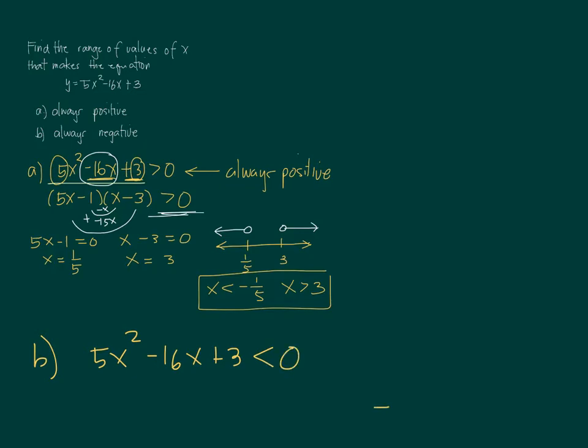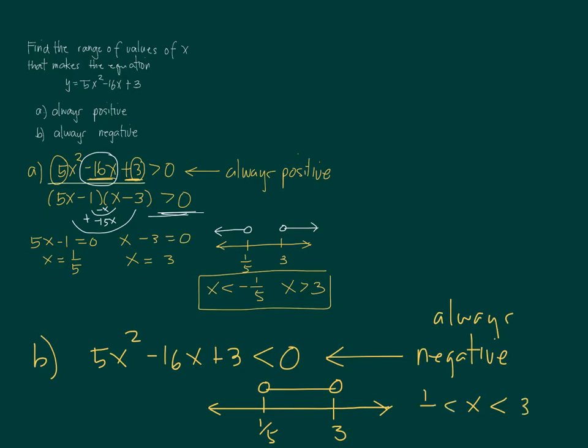That means we only, because the solution should be the same, we'll still consider 1 fifth and we'll still consider 3, but in this case, we have to consider the numbers between 1 fifth and 3. So it will always be negative when x is between 3 and 1 fifth. That's how you solve a problem like this. This is an application of quadratic inequalities, and it is applied to a quadratic function or a parabola.